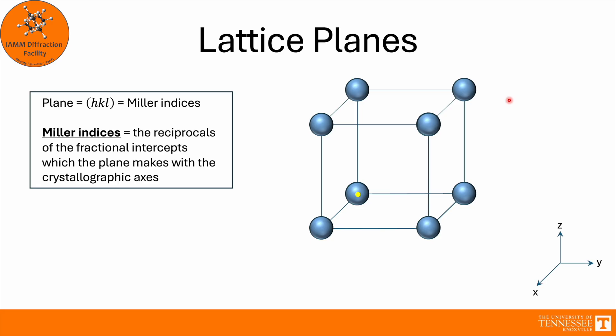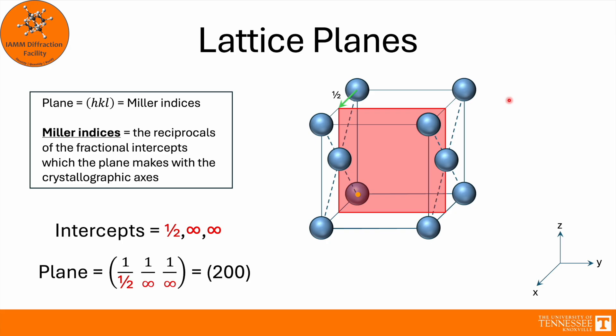Now let's see what happens if we have a base-centered cubic unit cell, and we identify the plane that goes through these new atoms. Well, now the new plane crosses the x-axis at one-half, it still never touches the y and z-axes, so those are still infinity. We take the reciprocals of these values, and we get that this is the (2,0,0) plane.